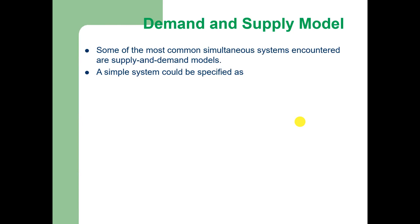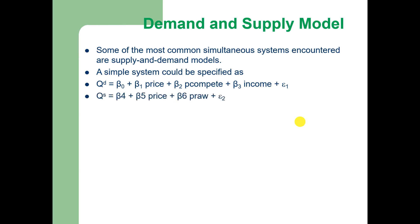Some of the most common simultaneous equation systems encountered are supply and demand models. A simple system of demand and supply could be specified as follows: QD is a function of price, price of competing goods, and income of the consumer plus epsilon. The supply function is equal to own price, then price of raw materials, and finally error term epsilon 2. In equilibrium, QD must be equal to QS — quantity demanded should equal quantity supplied.